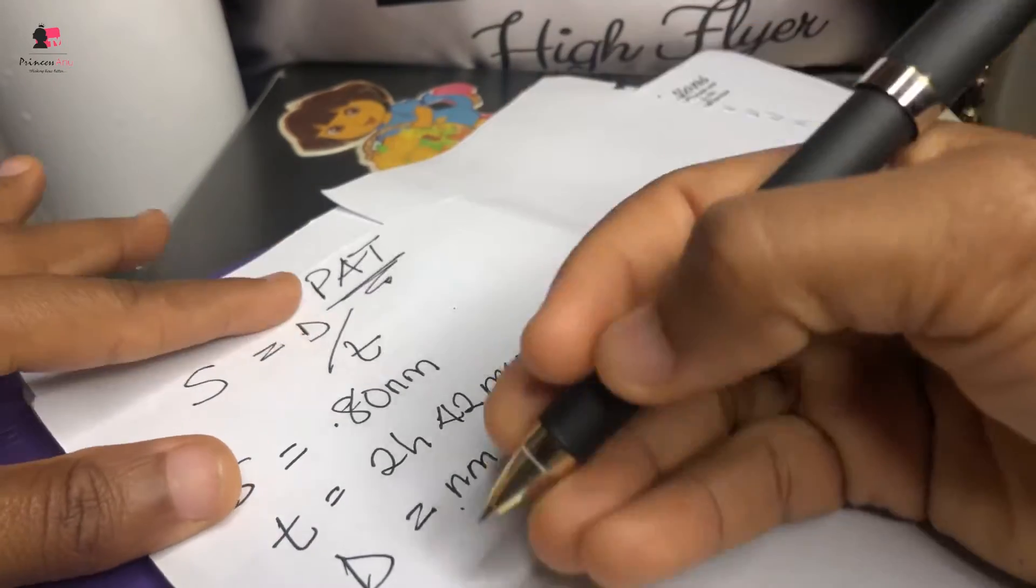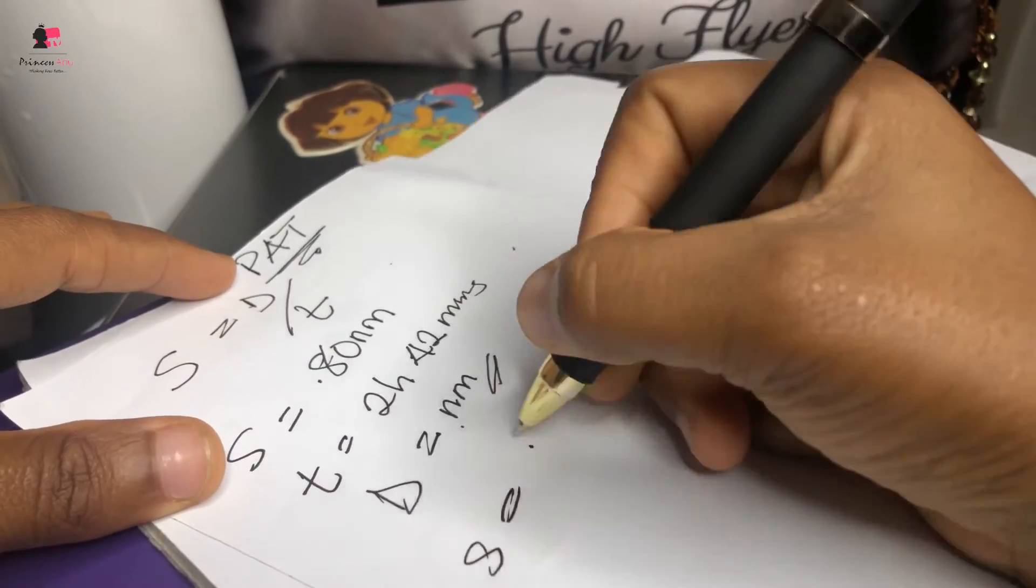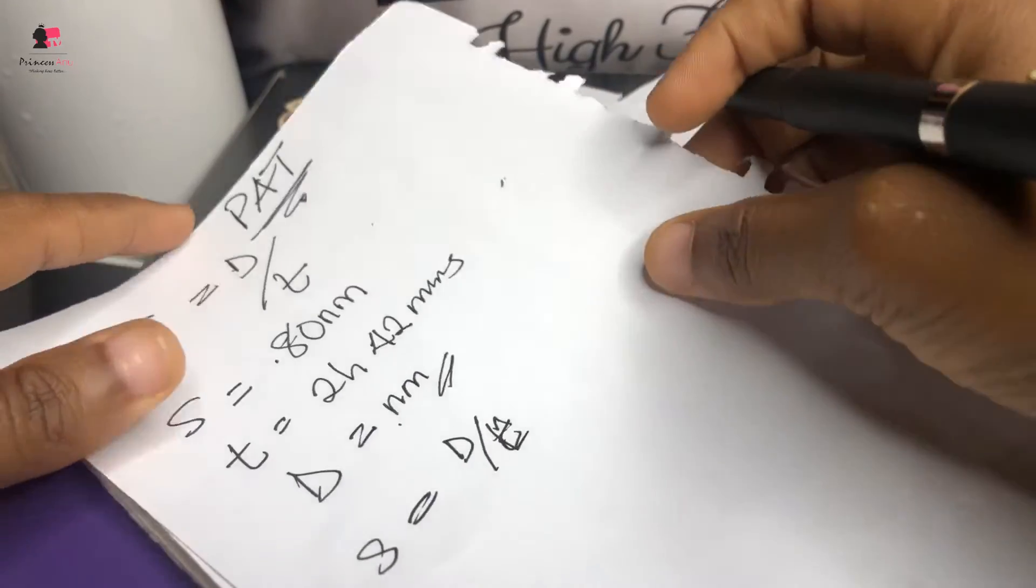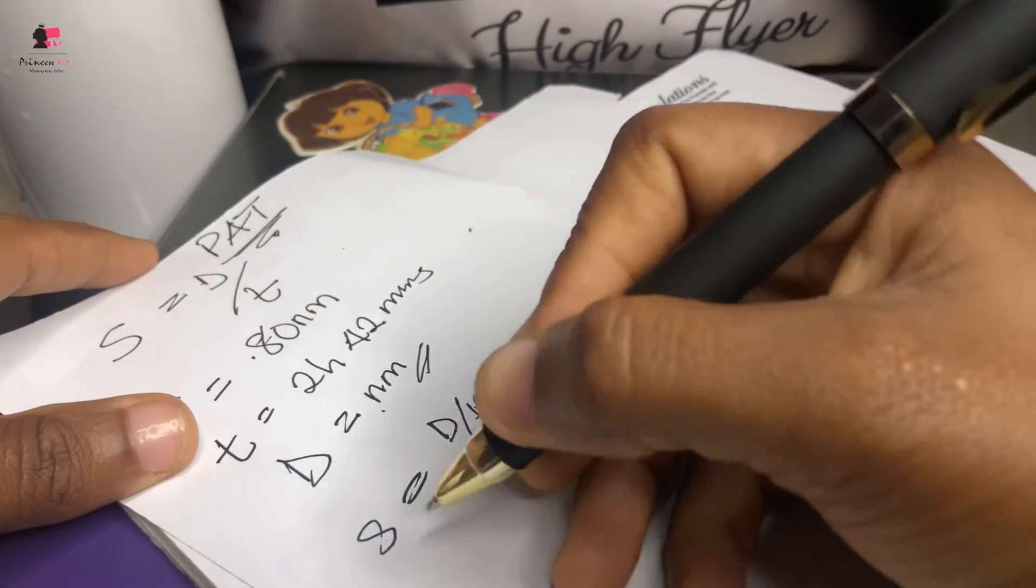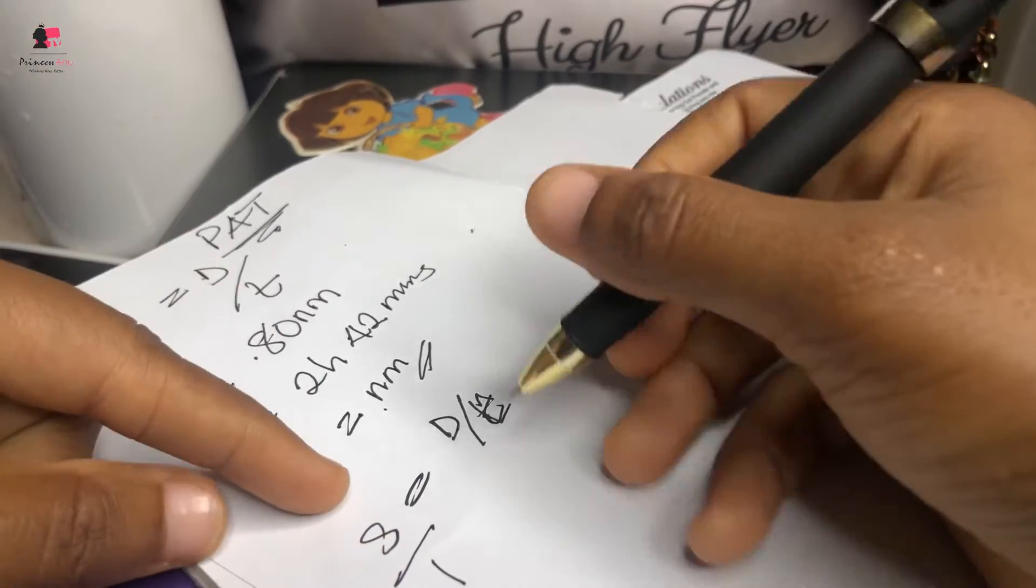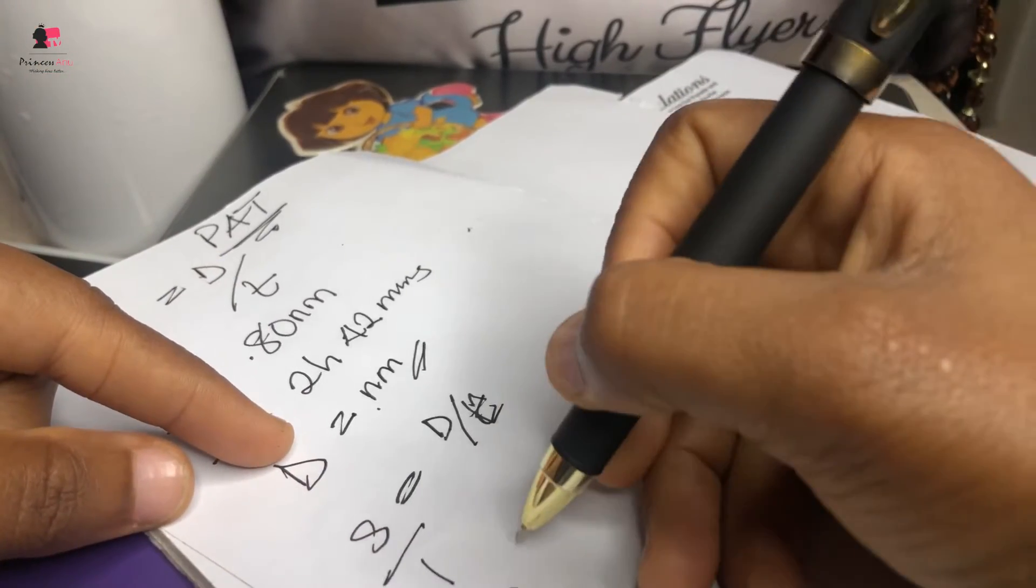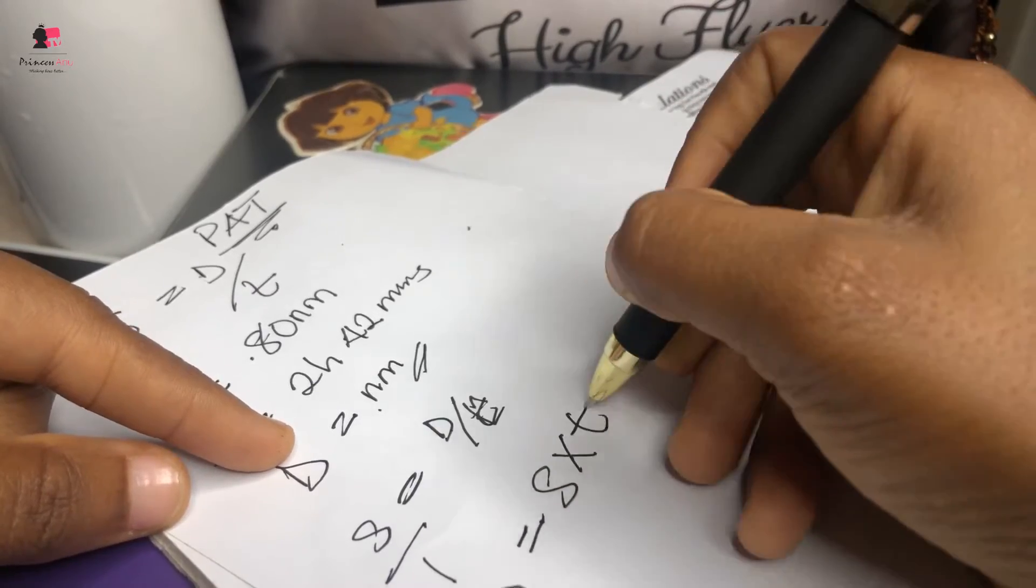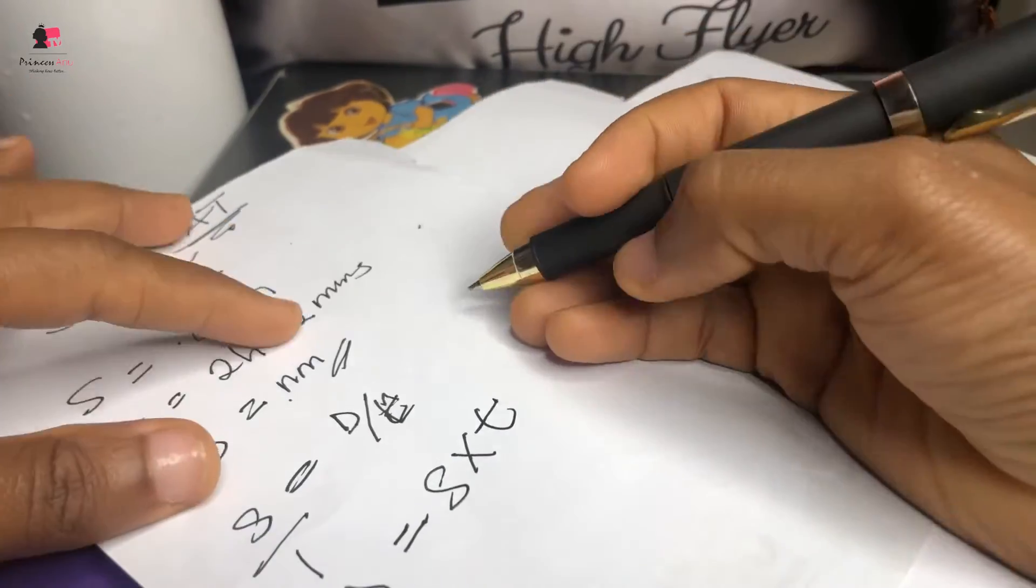Now, in order to find this, obviously if speed is equal to distance over time, that means to get the distance, you know this is over one. So in order to get the distance, it will be distance equals speed times time.